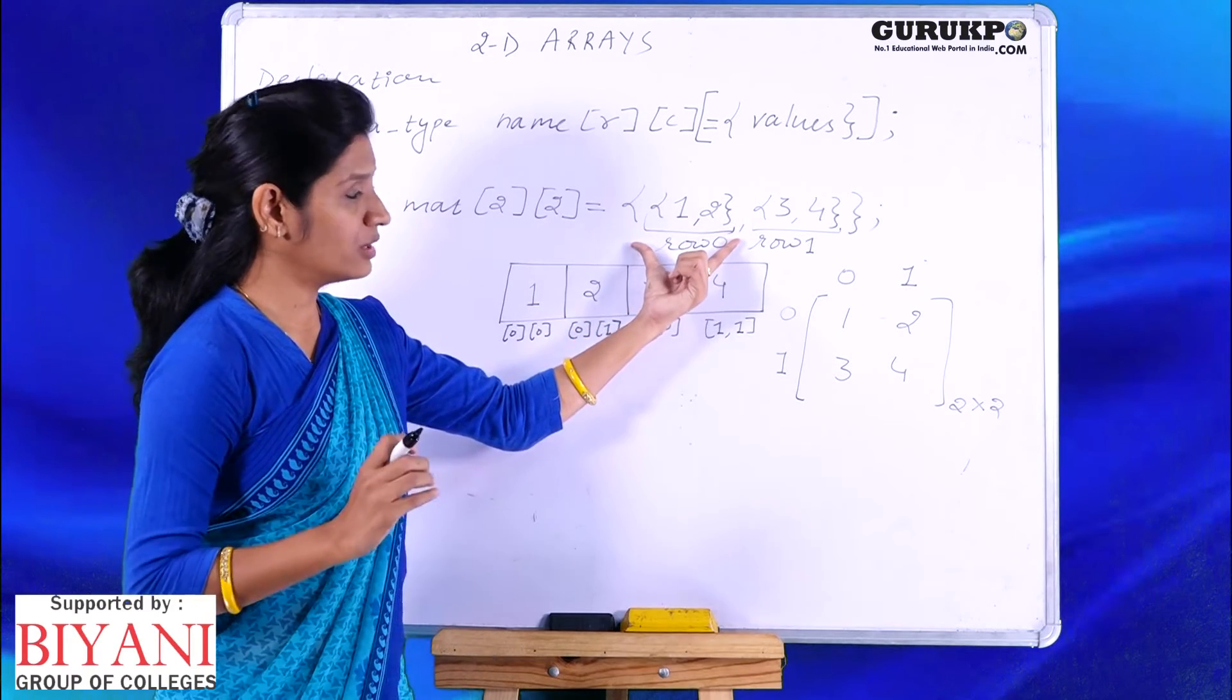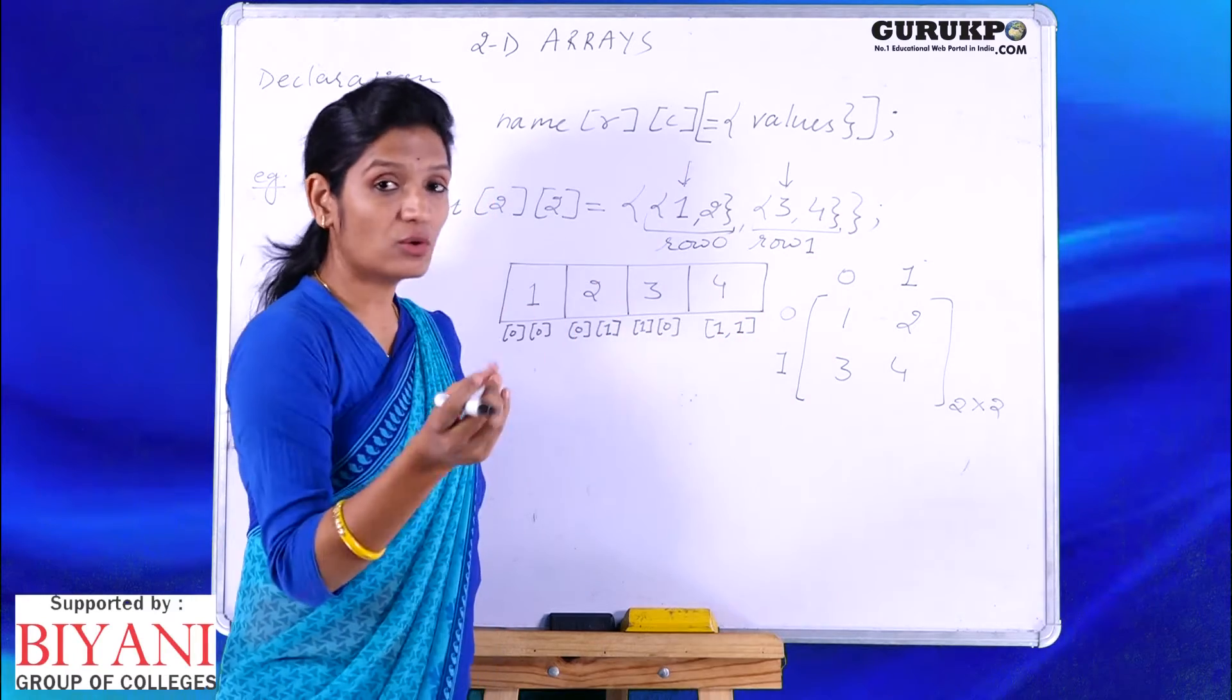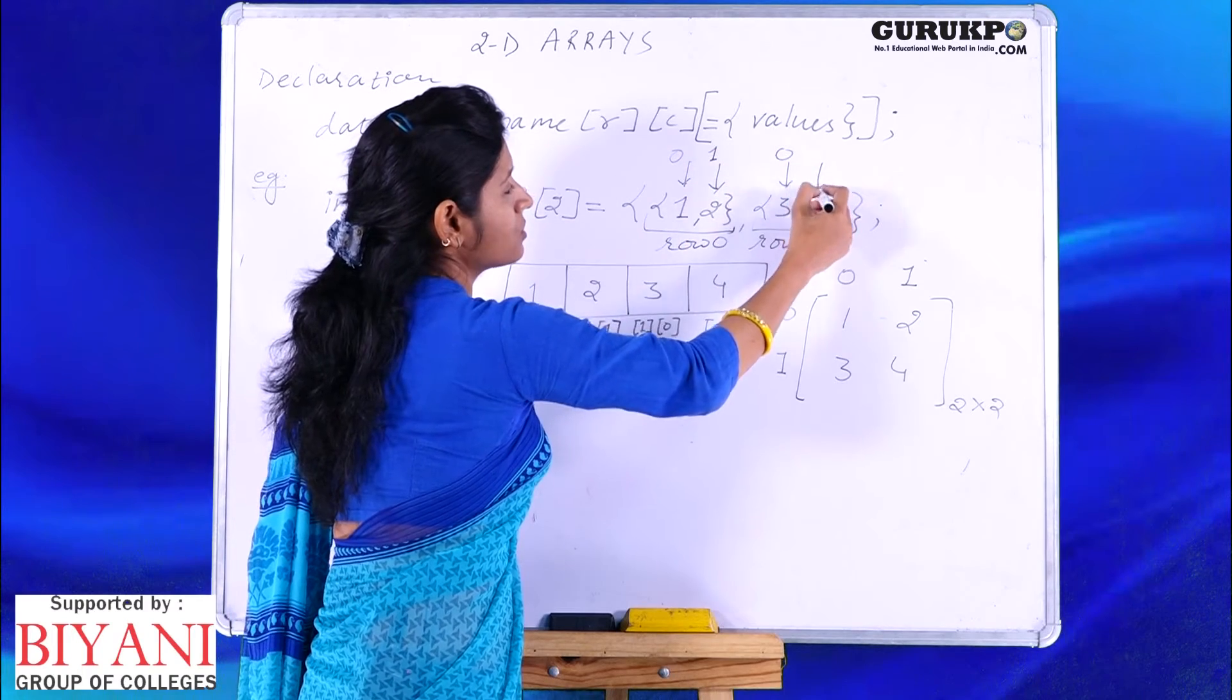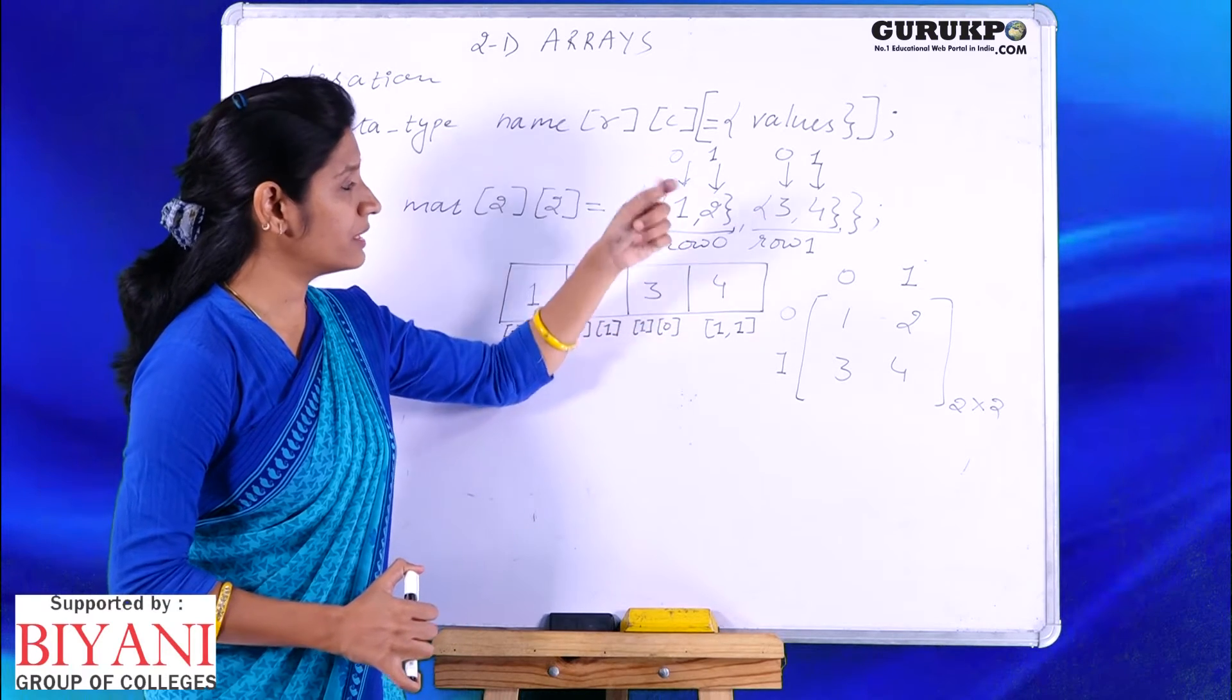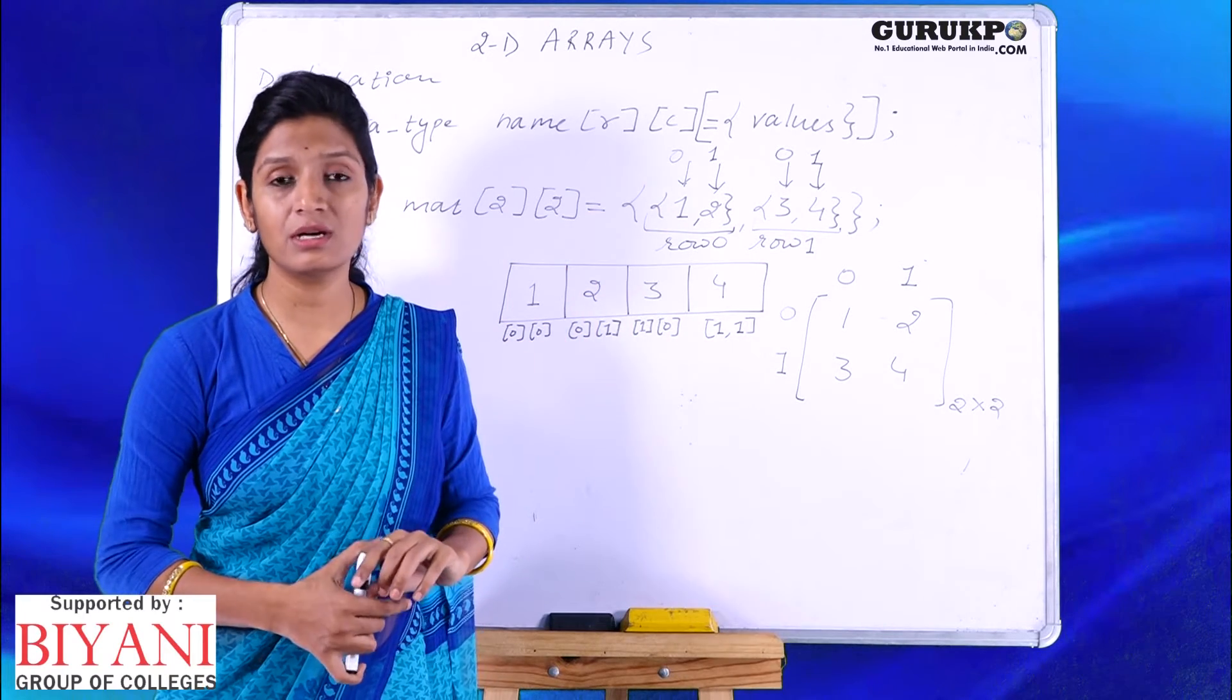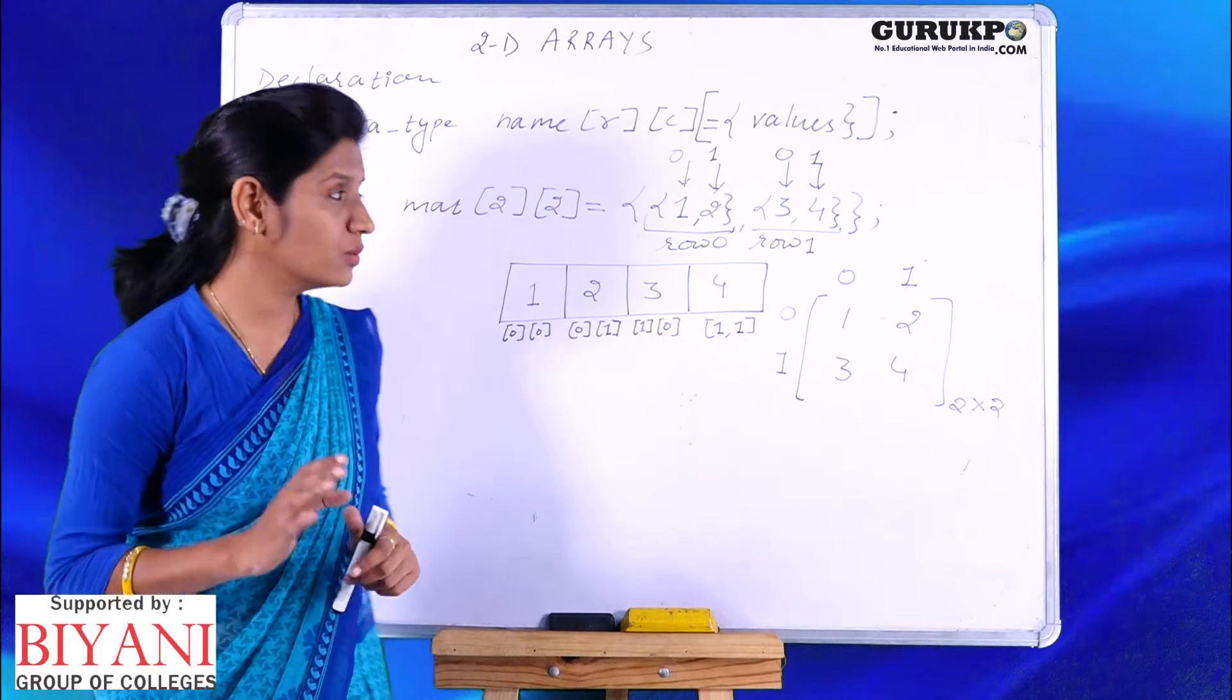First set of values is row 0 and second set of values is row 1. Then the first value in every row 0 is 0th column and so on. Second value in row 0 will be 1. This is how it will be stored: row 0 first element, row 0 second element, row 1 first element, row 1 second element. Index will always start from 0, as we have already seen in one dimensional arrays. The lower index of any array is always 0 and the upper index is always size minus 1.